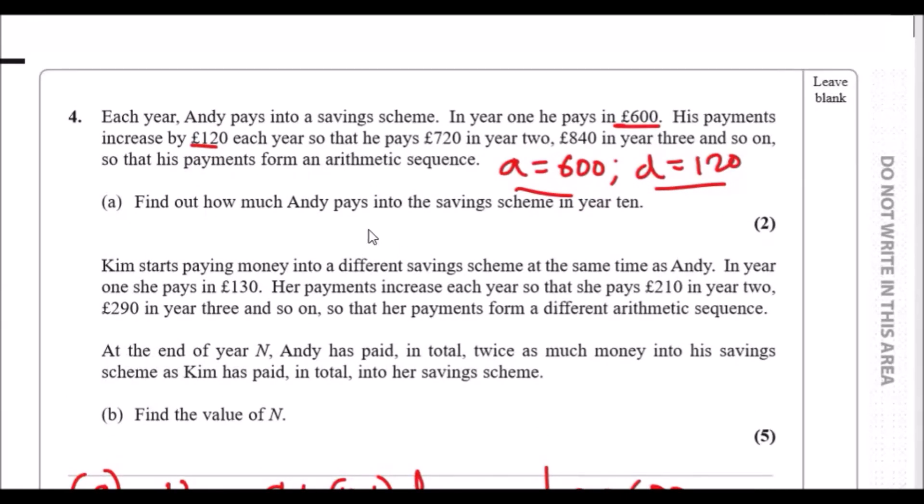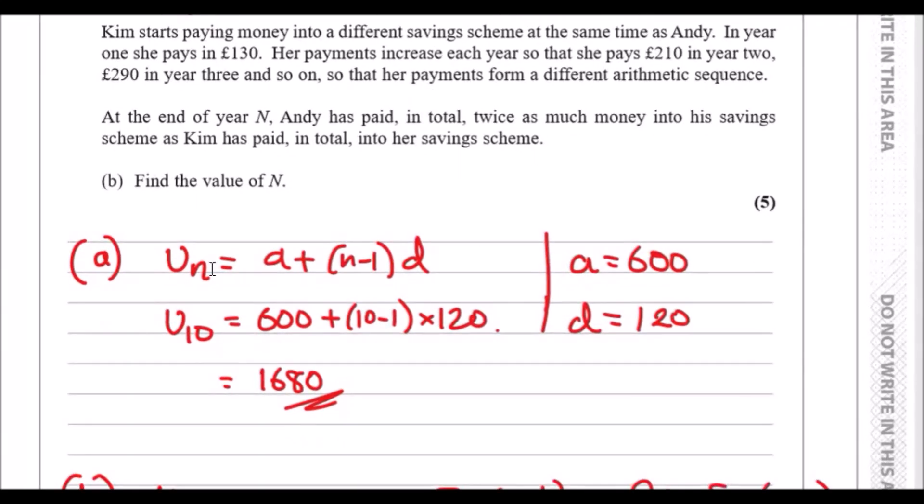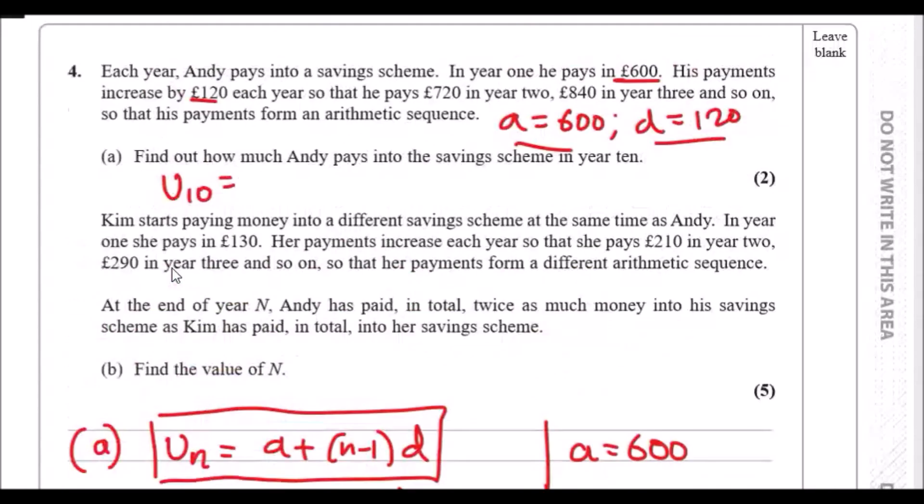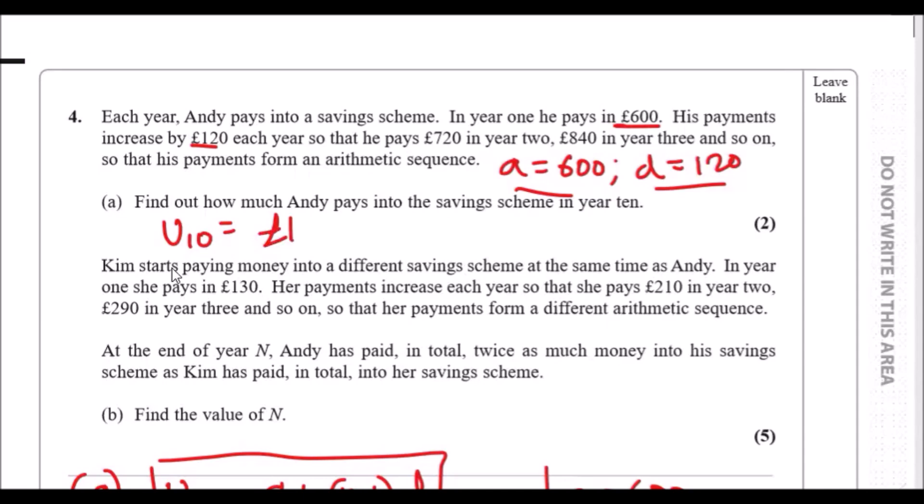So part A, find out how much Andy pays into the savings scheme in year 10. You just have to literally find out how much he gets in the 10th year. So in other words, U10. I solved it down here already. First thing first, we need to know the general formula, which is always A plus N minus 1D for each year. And because we want the 10th year, this means N is 10. And because we already know the value of A and D, let's just plug everything back in. And then you solve, expand, and voila, you get £1680. So that's how much Andy got in that year.